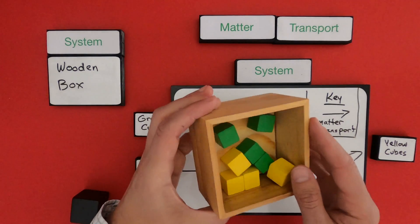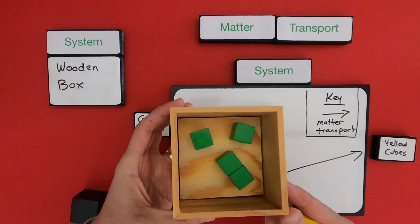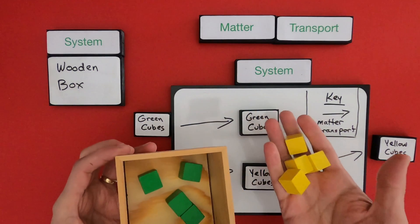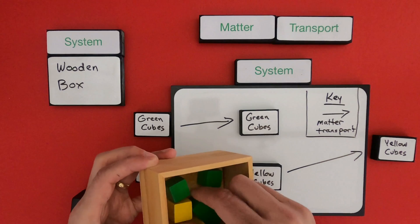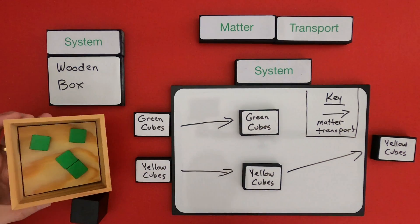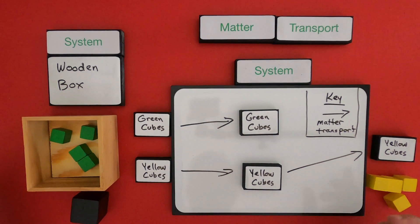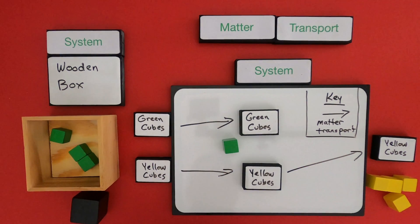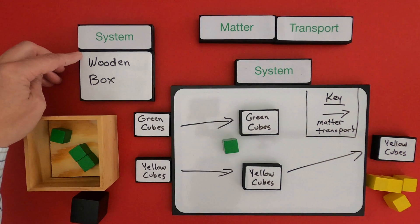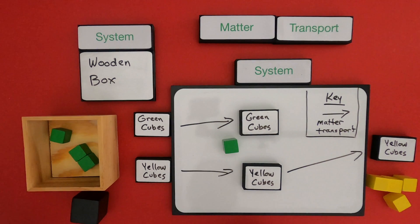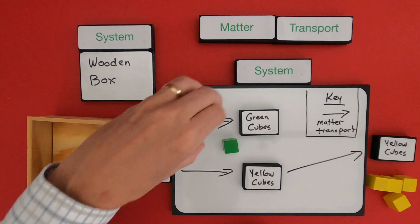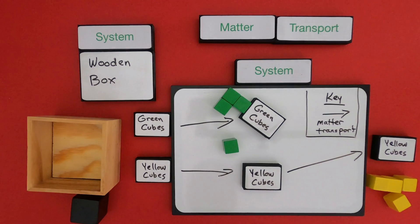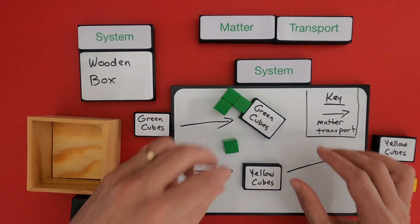What makes the yellow cubes interesting is they also leave the system. Why do the yellow cubes come out? It's because the green cubes are magnetic — they're magnetic so they stay in the system. Whereas the yellow cubes are not magnetic, and so they come out of the system. The green cubes remain within the system. Remember, it's really important that I've defined what the system is, otherwise we'd have no reference frame to figure out what's coming into the system and what's coming out. That is my first example of matter transport within a system.